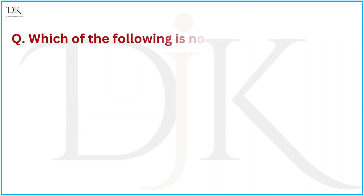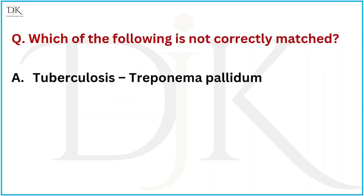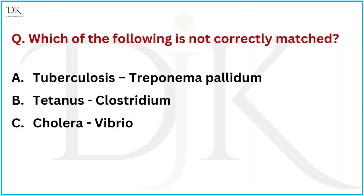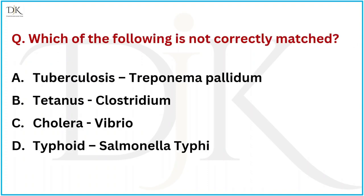Which of the following is not correctly matched? The right answer is Tuberculosis — Treponema pallidum.